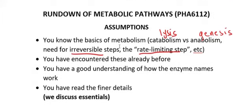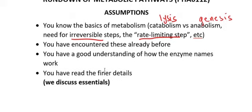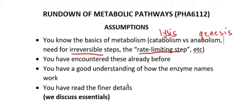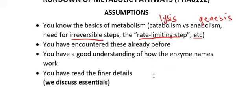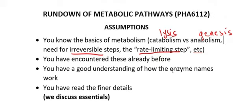You should have encountered these concepts already. For example, if you've never heard of the urea cycle during class, that should not happen because it's part of the course outline. You should also have a good understanding of how enzyme names work — if an enzyme ends in kinase, phosphorylase, lipase, or reductase, you should have an idea of what reactions are going on. I will not discuss everything in full detail here, because this is a review.